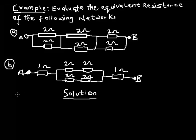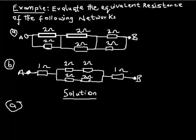First you need to locate your parallel connection and also your series connection. A parallel connection has nothing to do with the alignment of the resistors — it has everything to do with the connection. The only way to know whether it's parallel or series is to look at how the current flows. For series there's no branch; for parallel there is a branch. As current moves from A and enters this network, it branches into two ohms and into another two ohms — so those two resistors are in parallel.